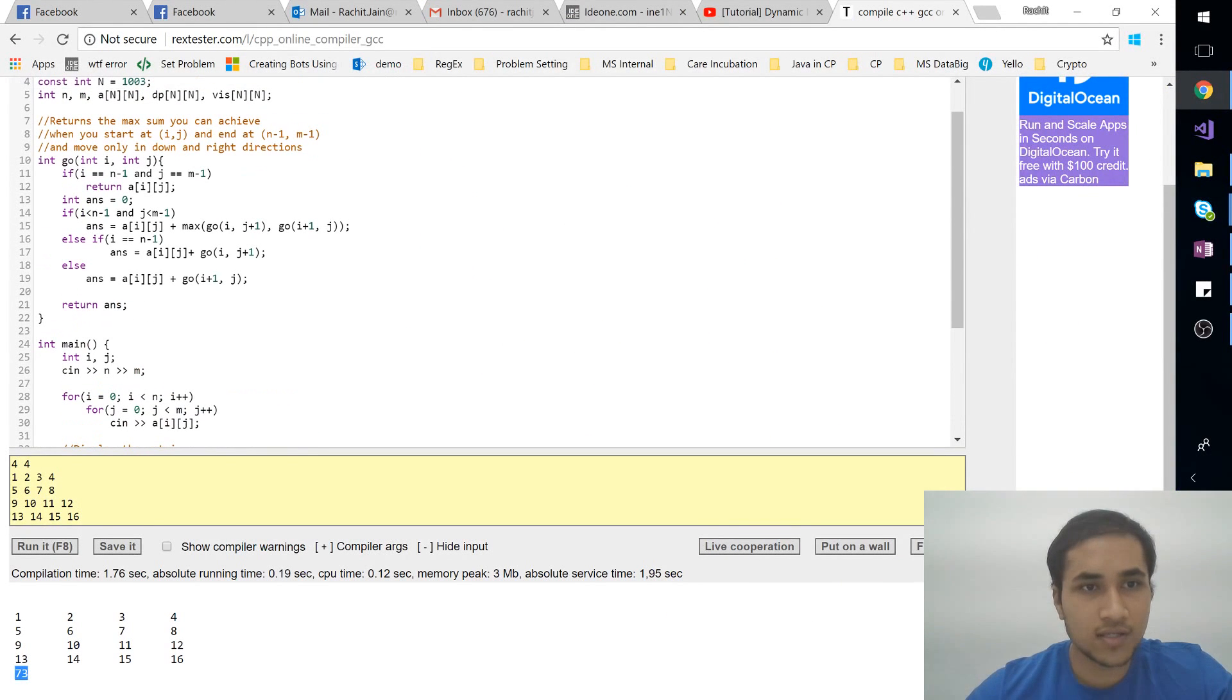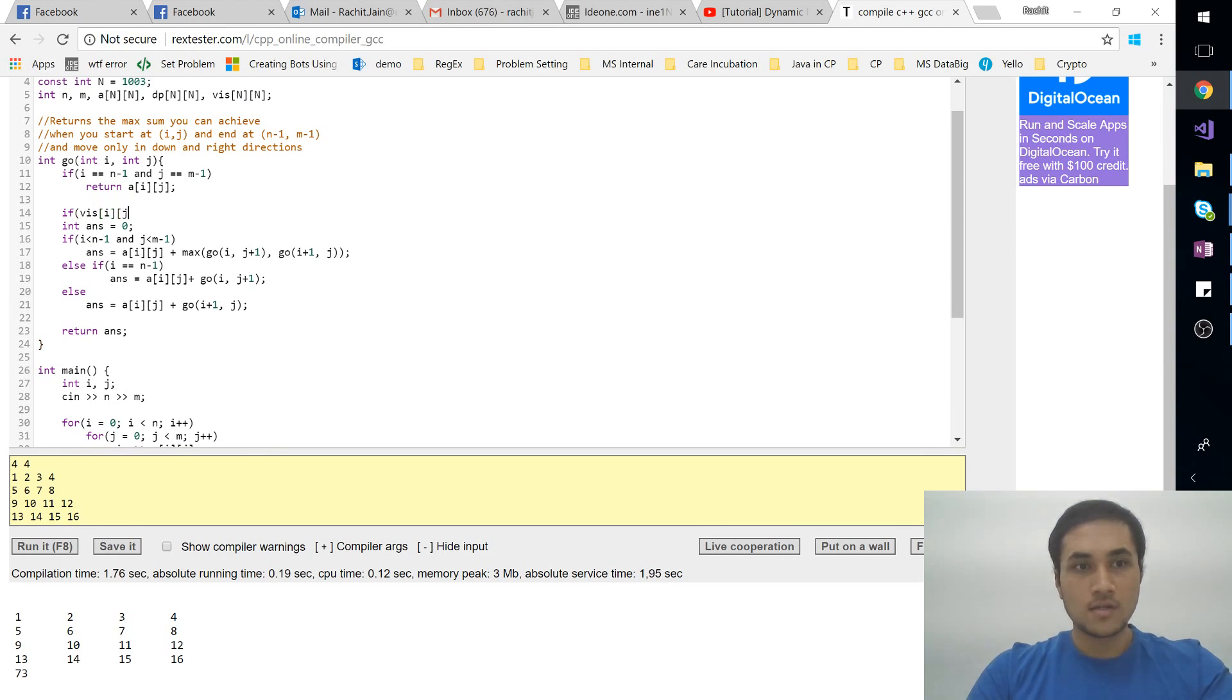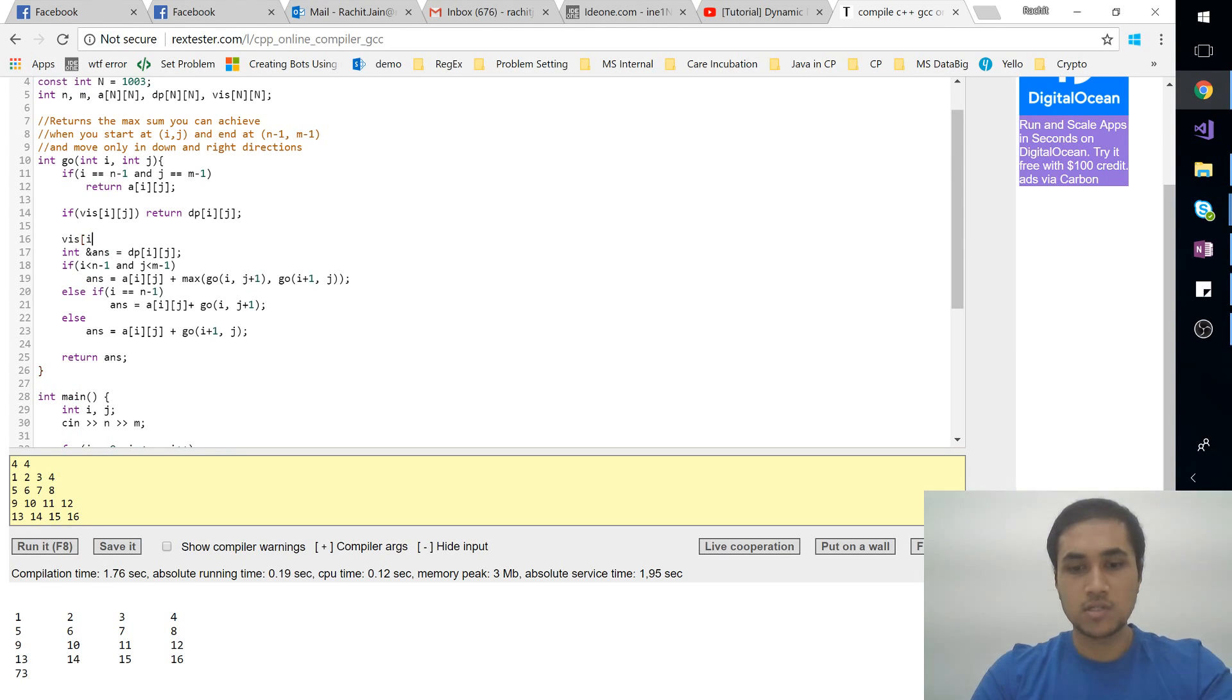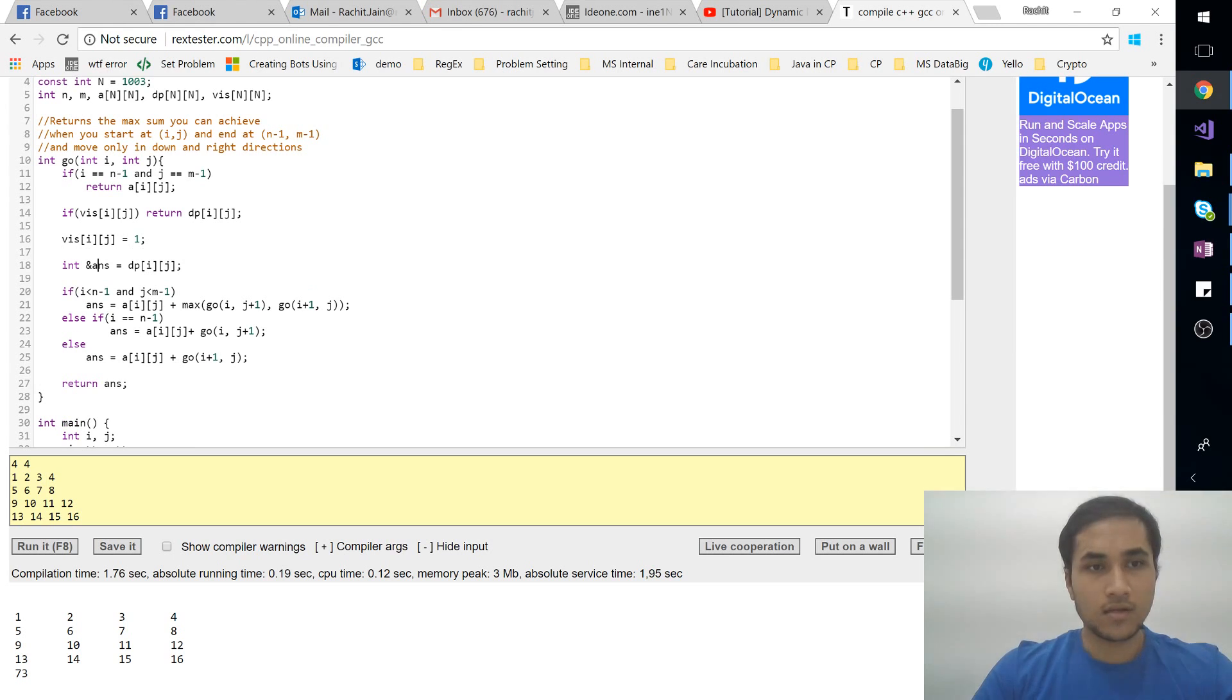And how you do this is: if you have visited this cell, then you'll simply return the answer. Okay, otherwise I'm storing the reference over here. So if visited, return the answer, otherwise mark this as visited. What I'm doing over here essentially means if I change answer, it will directly reflect the value stored in dp[i][j]. All right, it's nothing else.